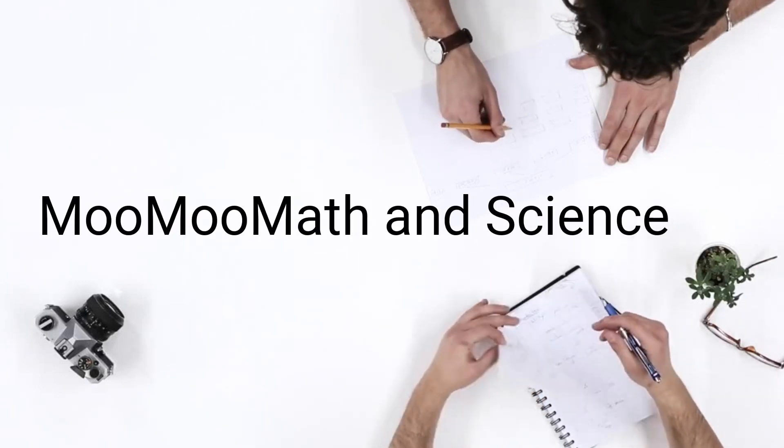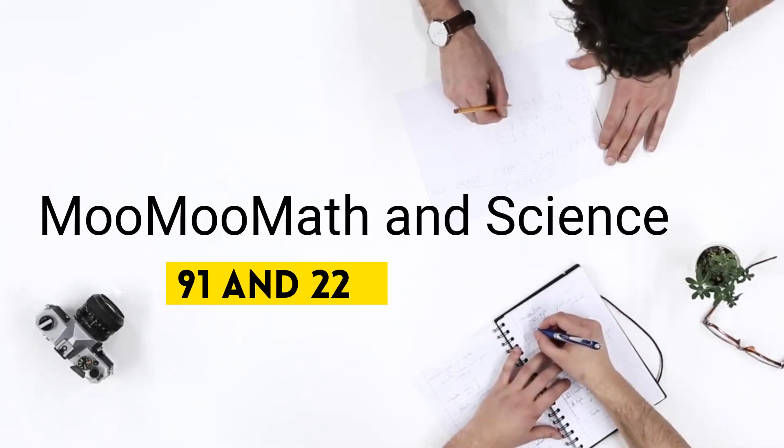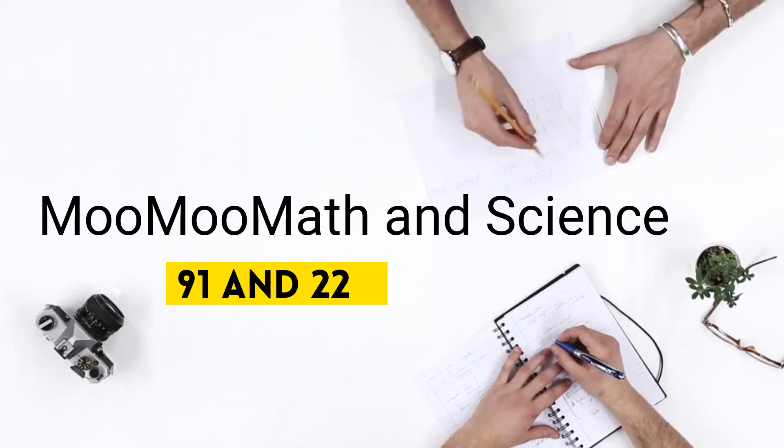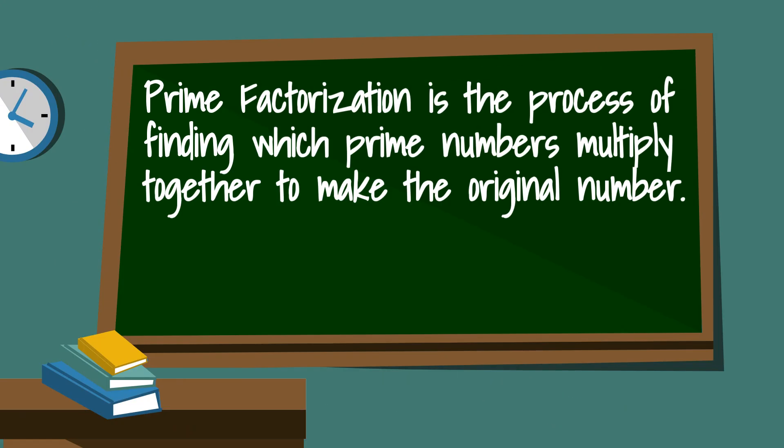Welcome to Moomoo Math and Science and the prime factorization of 91 and 22. Prime factorization is the process of finding which prime numbers multiply together to make the original number.